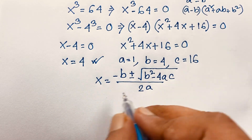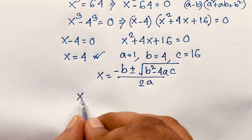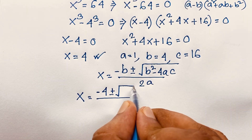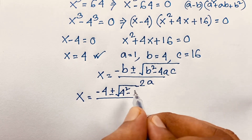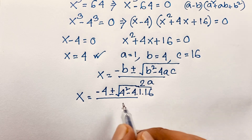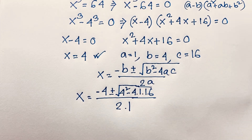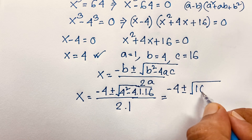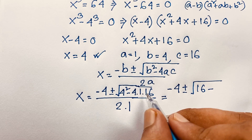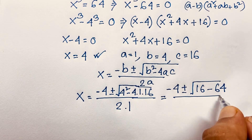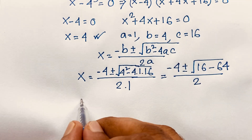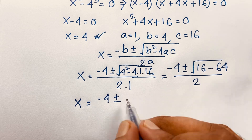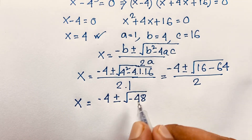Now substituting the values: x equals minus 4 plus or minus square root of 4 squared minus 4 times 1 times 16, over 2 times 1. This gives minus 4 plus or minus square root of 16 minus 64, over 2. So we have square root of minus 48 over 2.